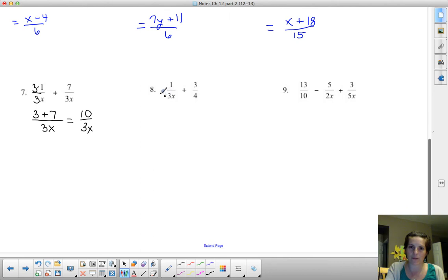I would need to multiply the first fraction by 4, and I need to multiply the second fraction by 3. But my common denominator, that would give me a 12x and a 12.